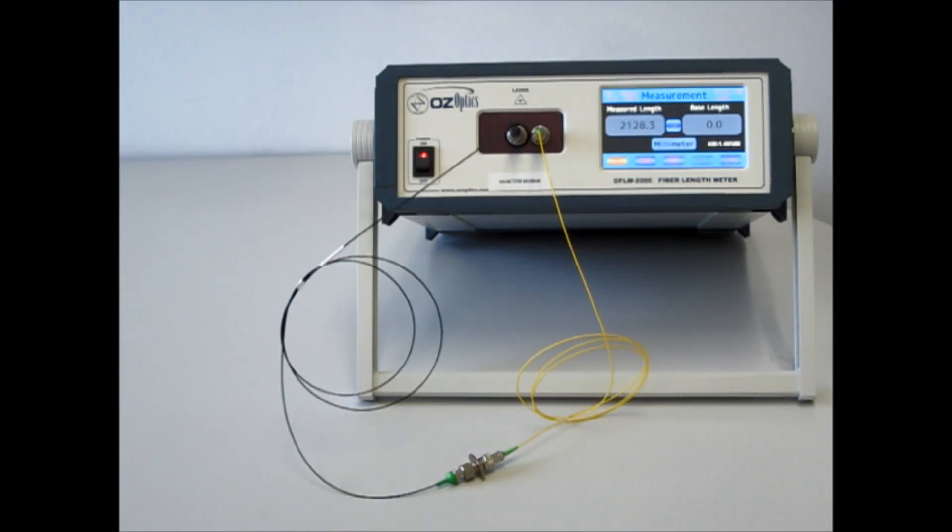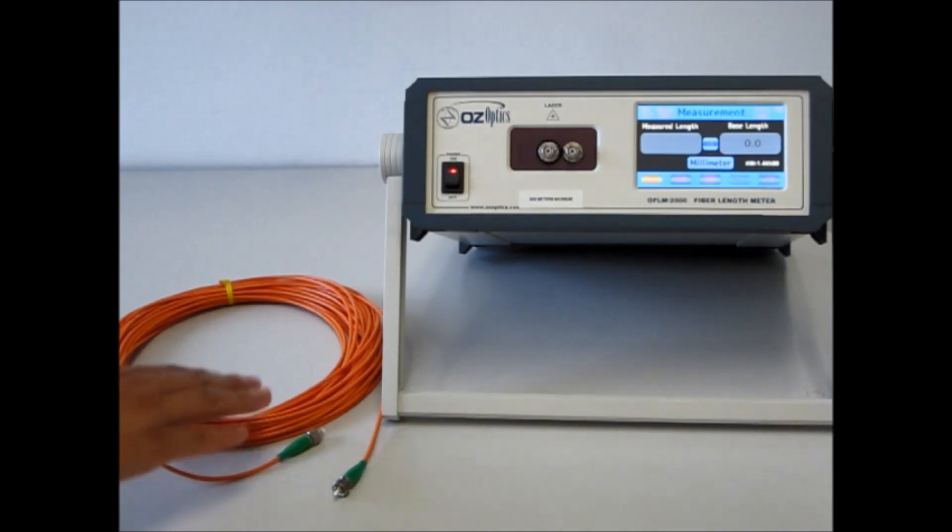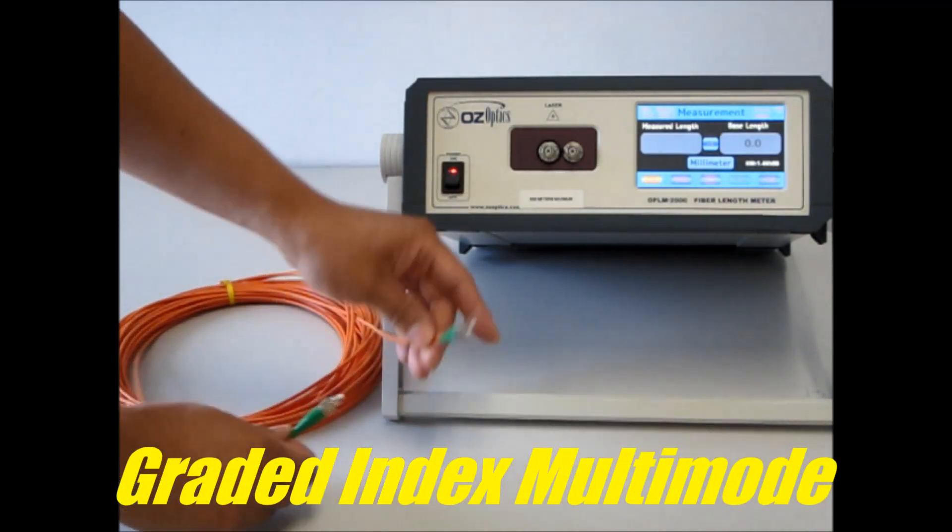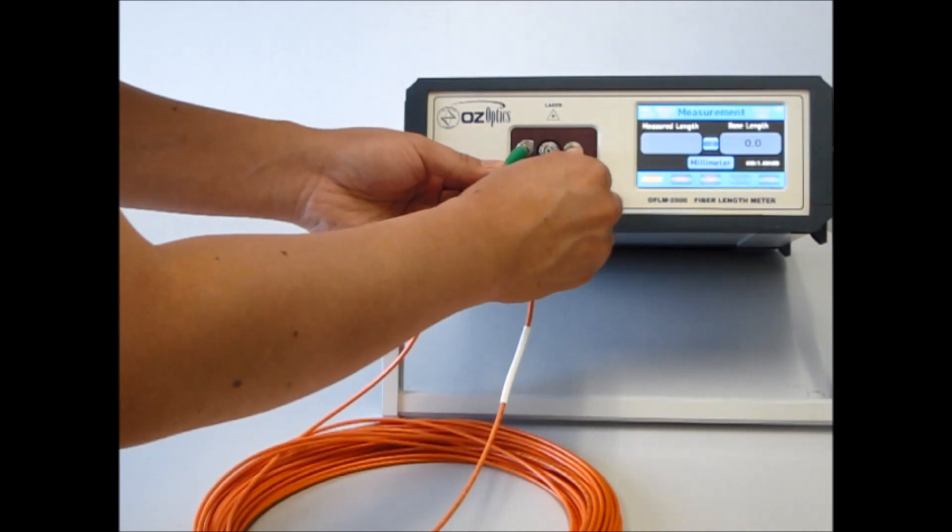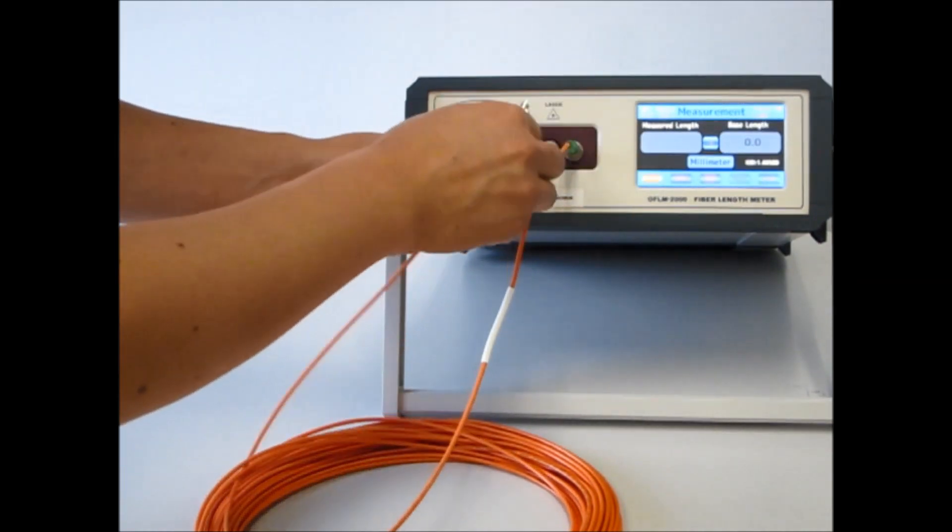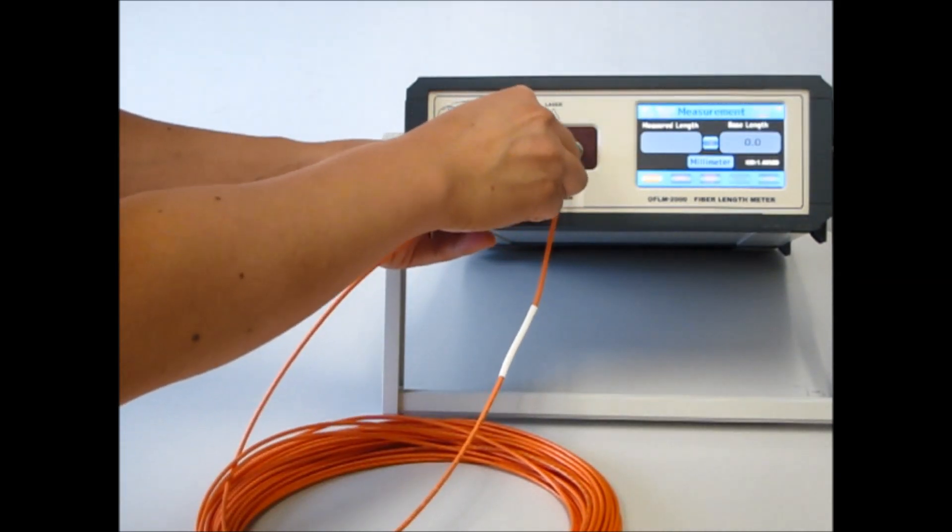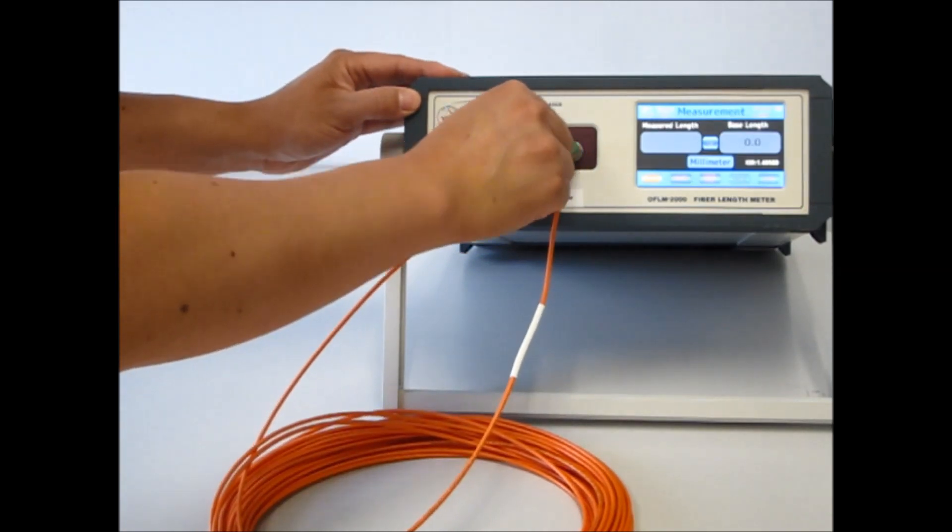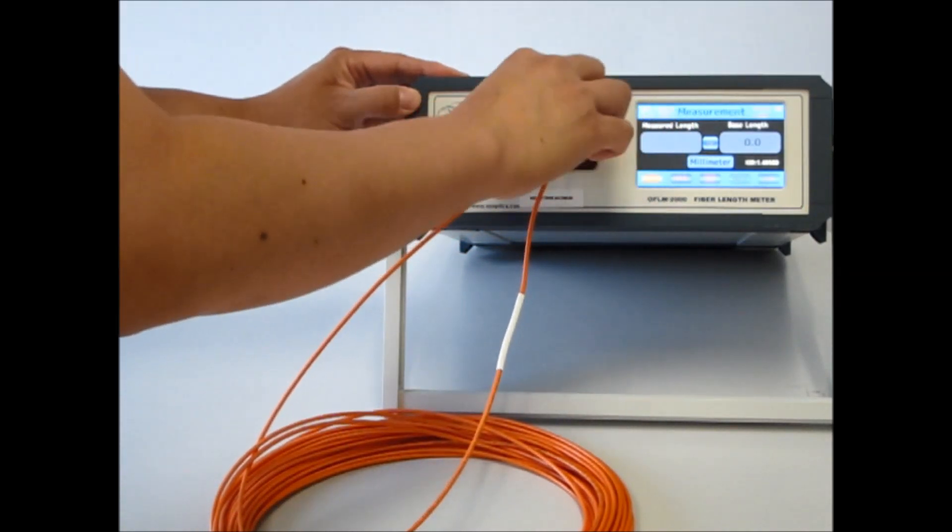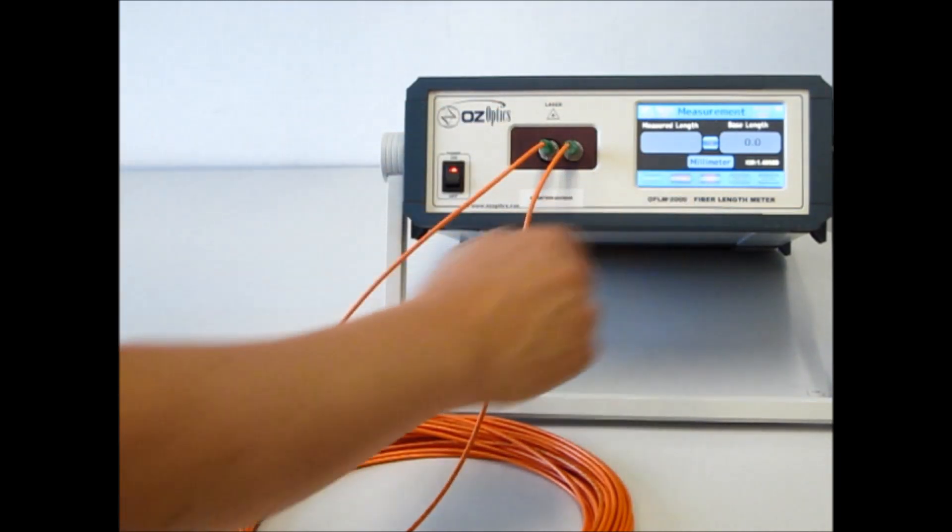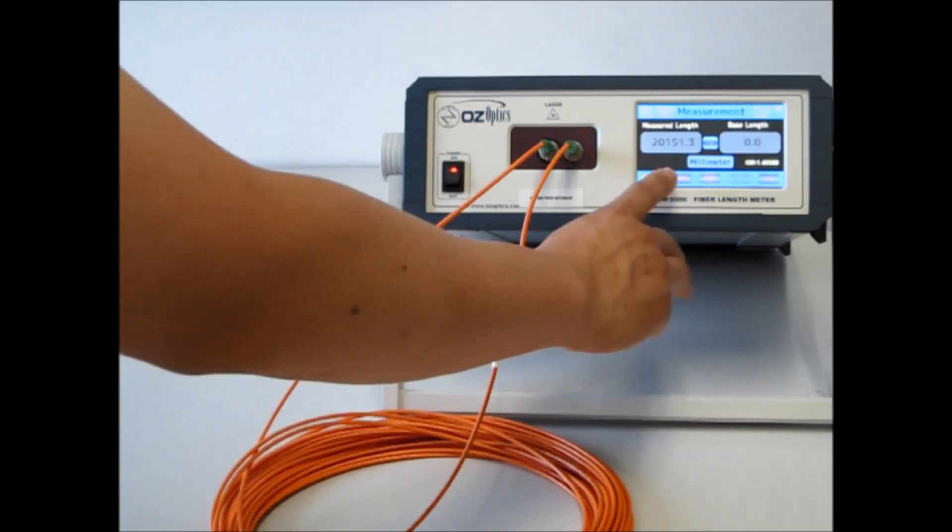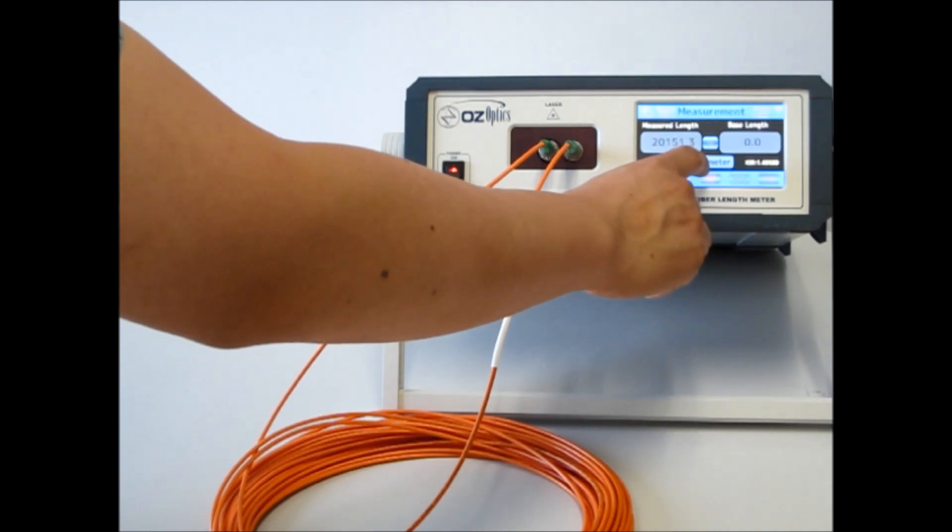Now that you've seen the key functionality of the fiber length meter, we'll demonstrate the various fibers and lengths that it can measure. This orange patch cord is a graded index multi-mode fiber with APC connectors on both ends. Plugging this one in and tightening up the connections, then pushing the run button, you'll see that this patch cord is 20,000 millimeters long, or 20 meters if you prefer.